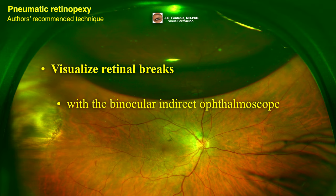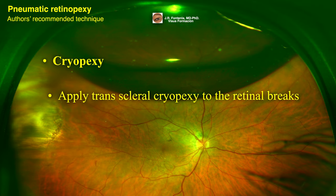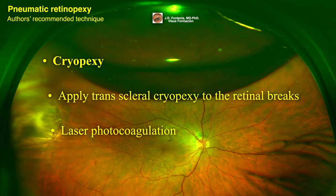Retinal breaks are visualized with the binocular indirect ophthalmoscope, then transcleral cryopexy is applied, taking care to avoid excess cryotherapy to prevent release of RPE cells and proliferative vitreoretinopathy. Laser photocoagulation can be used in attached retinal areas. An alternative staged procedure involves first injecting gas, positioning the patient with the bubble on the tear to flatten the retina, and then performing laser a few days later once the retina is flat.